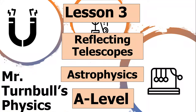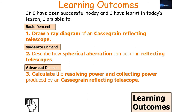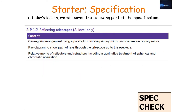Welcome to today's lesson looking at reflecting telescopes, which is part of the astrophysics option for AQA A-level physics. In today's lesson we're going to look at how to draw ray diagrams for Cassegrain reflecting telescopes. If successful, we should be able to draw a ray diagram of a Cassegrain reflecting telescope, describe how spherical aberration can occur, and calculate the resolving power and collecting power — falling under AQA specification 3.9.1.2 reflecting telescopes.